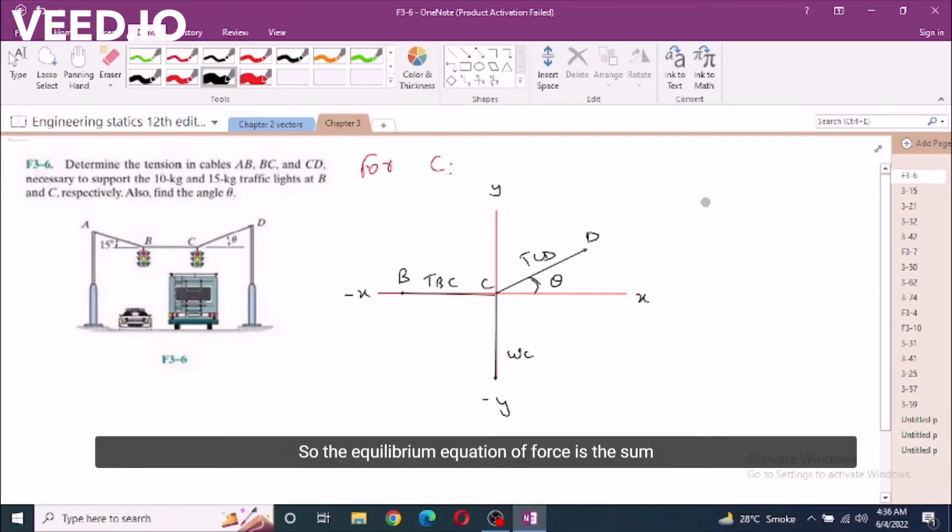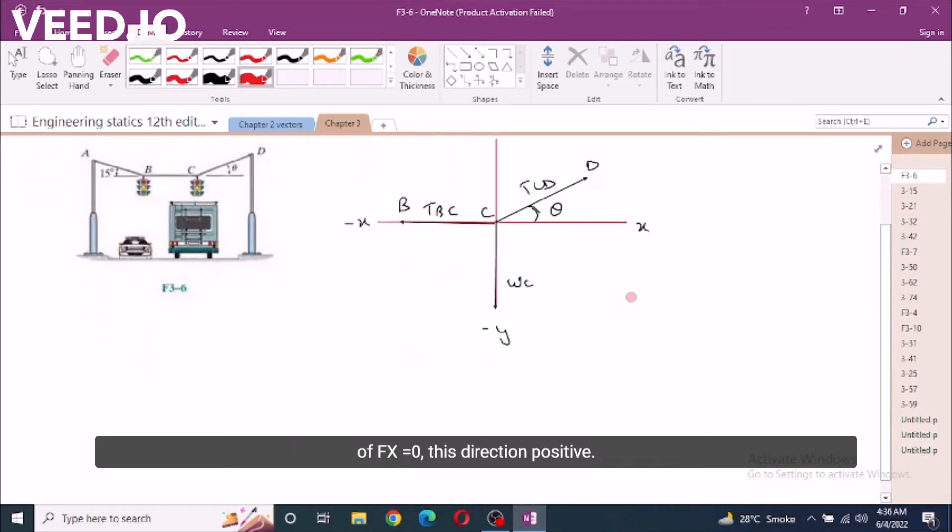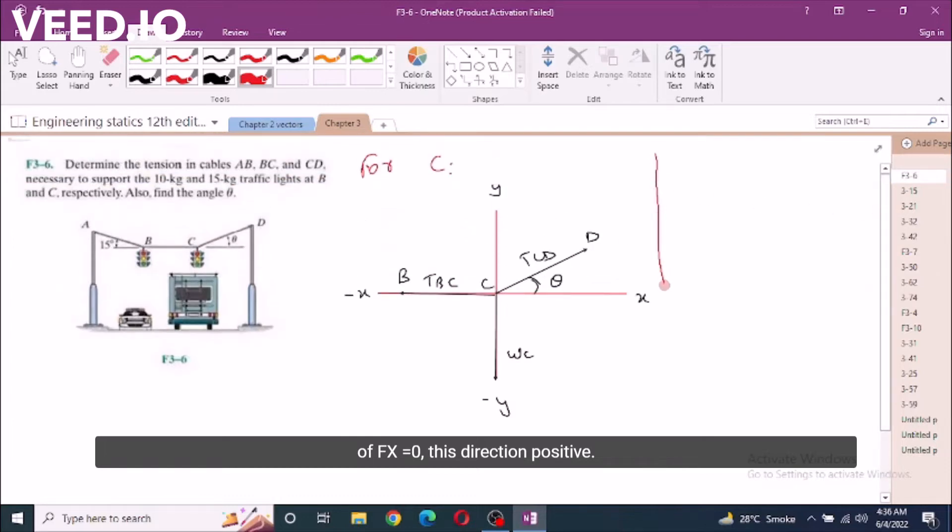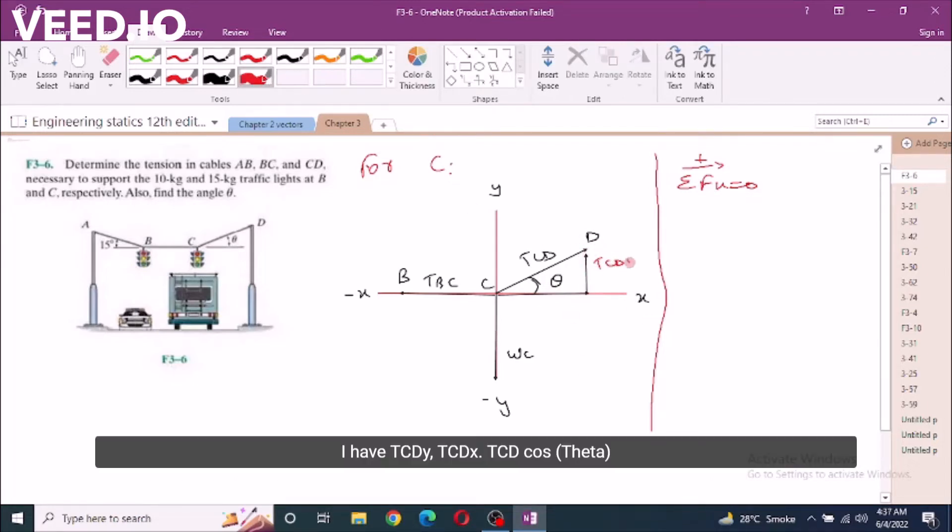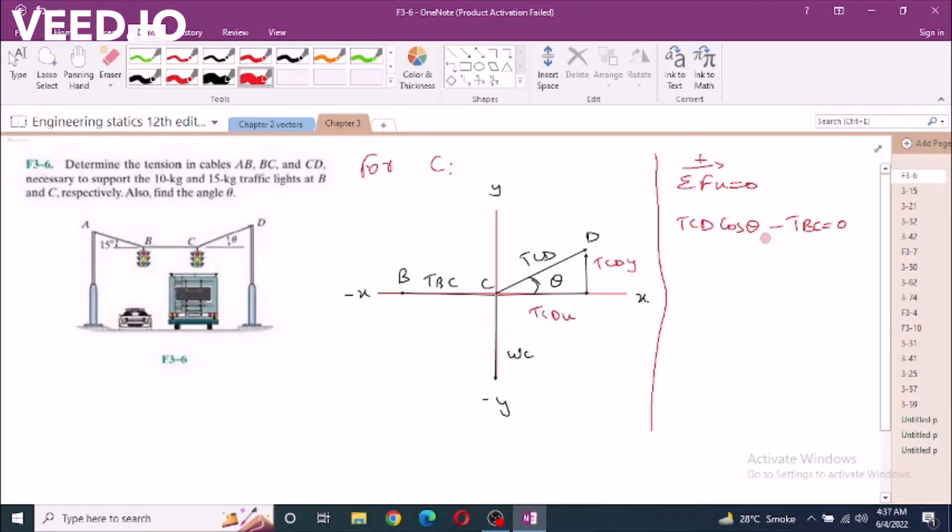So the equilibrium equations of force: sum of Fx equals zero, taking this direction positive. So I have one component of TCD, TCD cos theta minus TBC equals zero. This is our first equation.